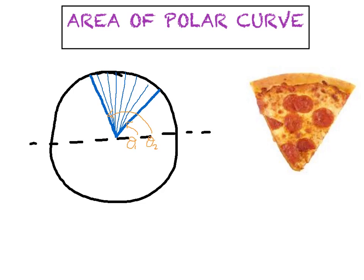Welcome back everybody. We've really nailed down our polar slope the last couple of days. We've been able to find where the curve has horizontal or vertical tangent lines and write the equation of other tangent lines. Now we're ready to graduate to a totally new topic called the area within a polar curve, and it's really a drastically different way of thinking.